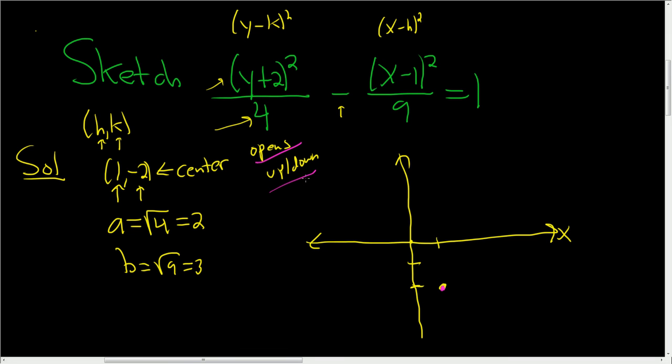Since it opens up and down, we're going to go up and down by a. We'll go up by 2 from the center. So 1, 2 right there. And then 1, 2 right there.